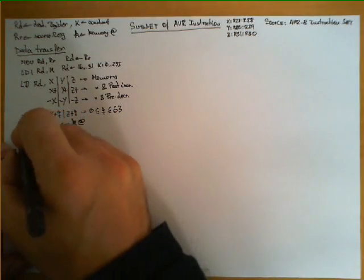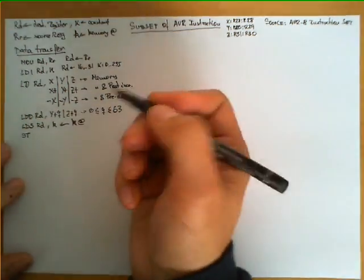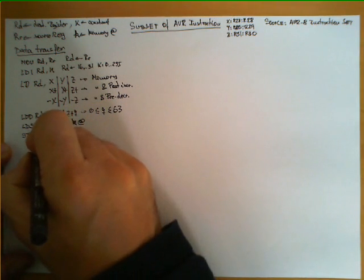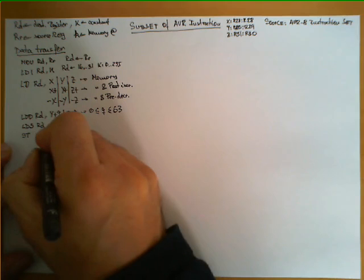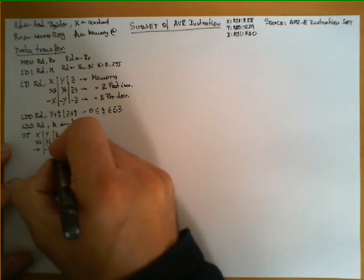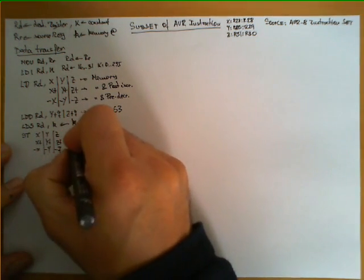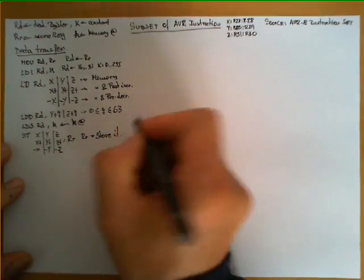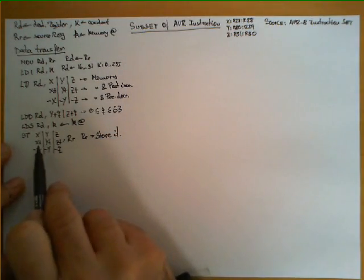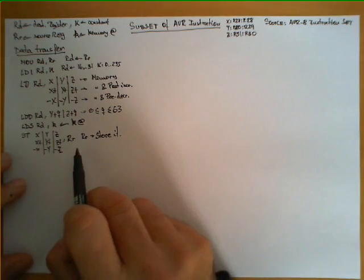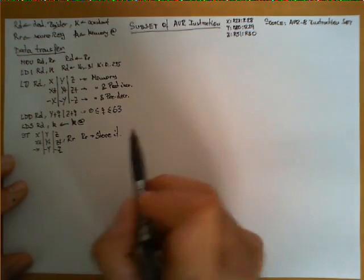The processor also offers analogous instructions to bring data from registers to memory. The ST instruction has three variants with X, Y, and Z. It takes register RR and stores it in the memory address contained in the specified pointer register. The same two variants apply: ST with X+, Y+, or Z+ performs a post-increment, and -X, -Y, -Z first decrements the register, then stores the data from RR at that memory location.